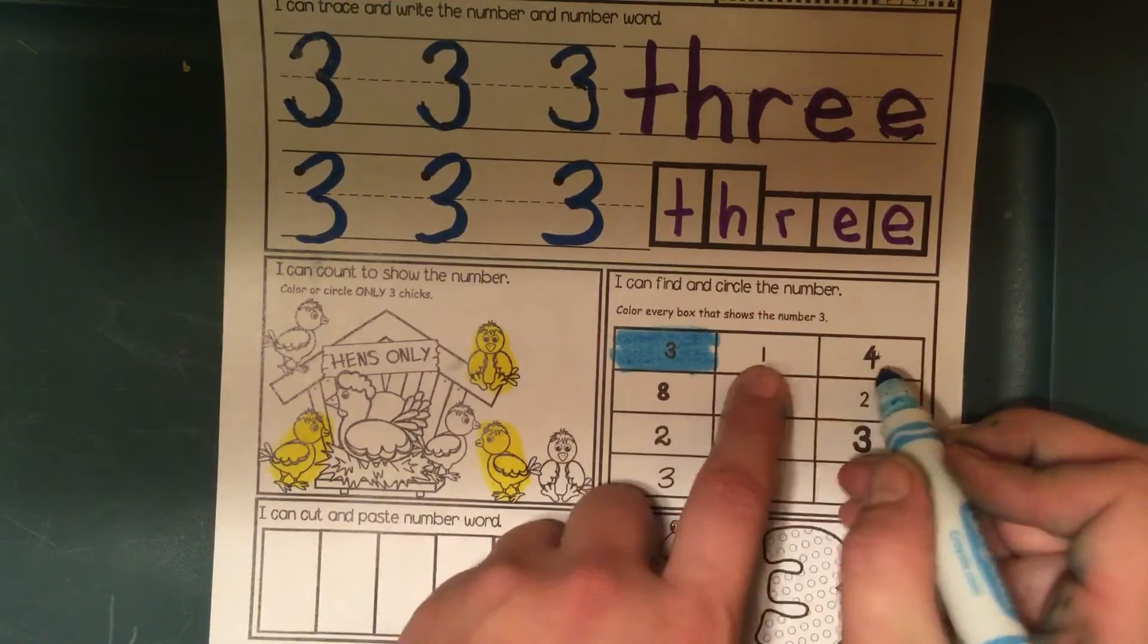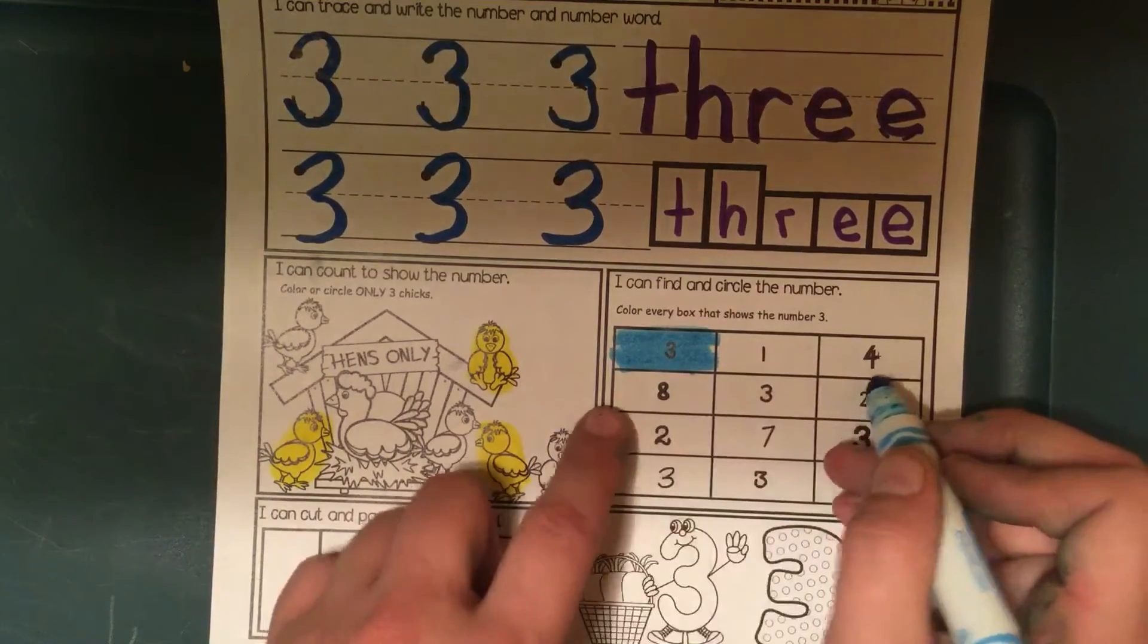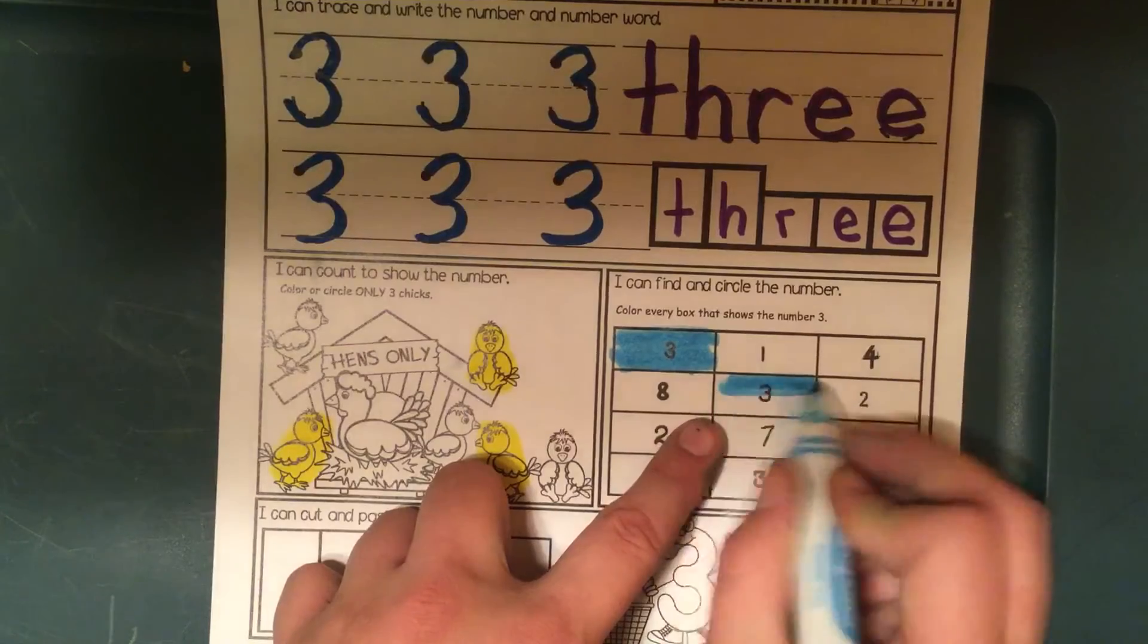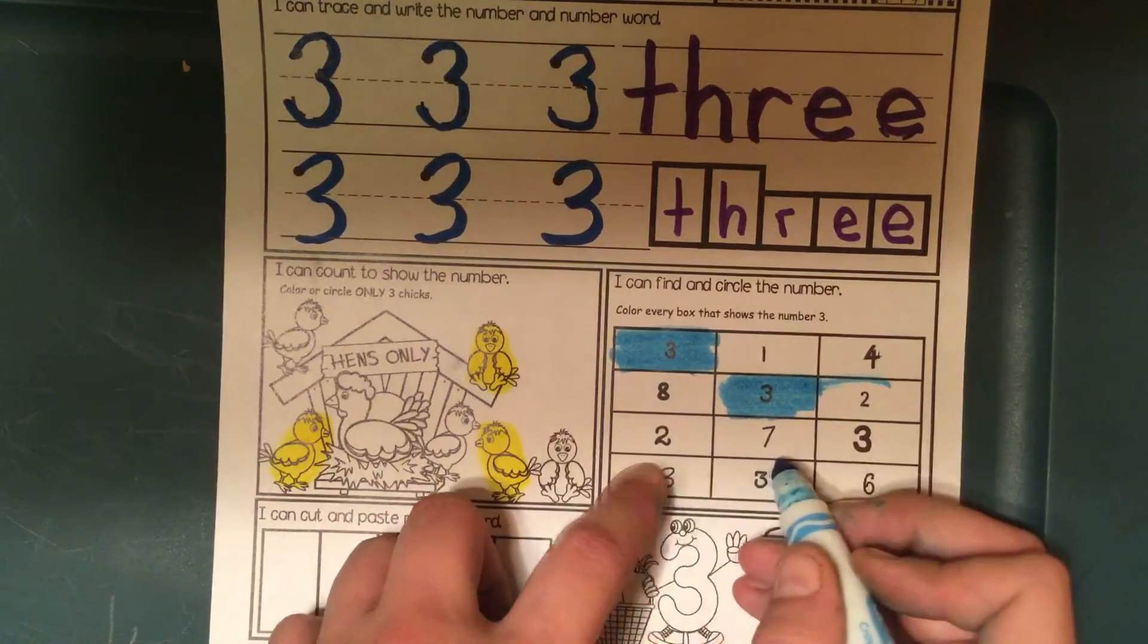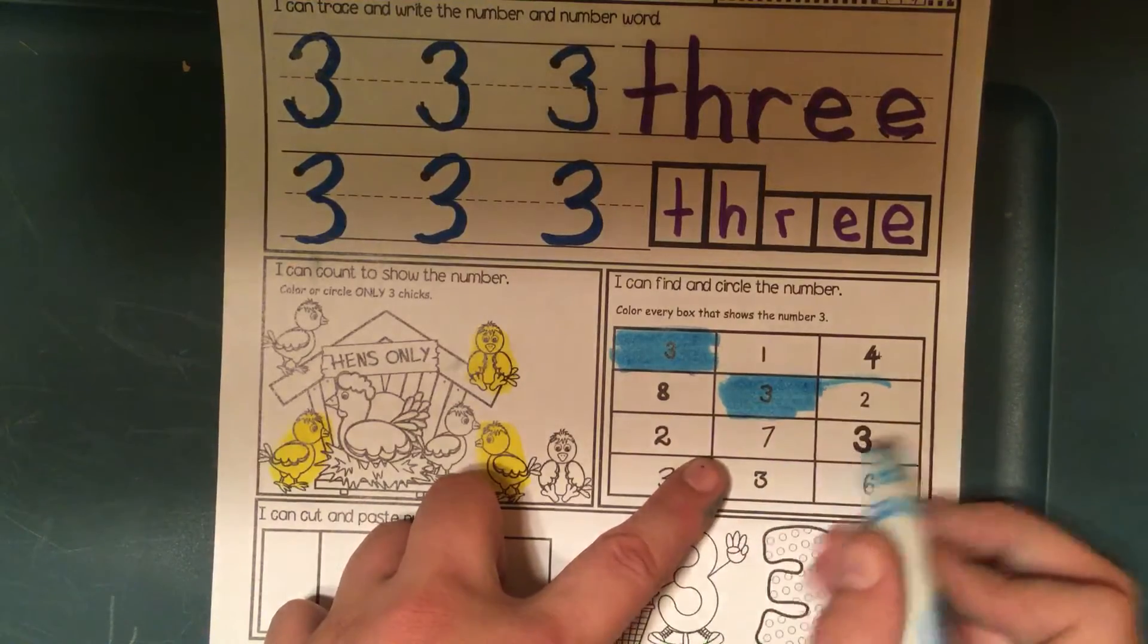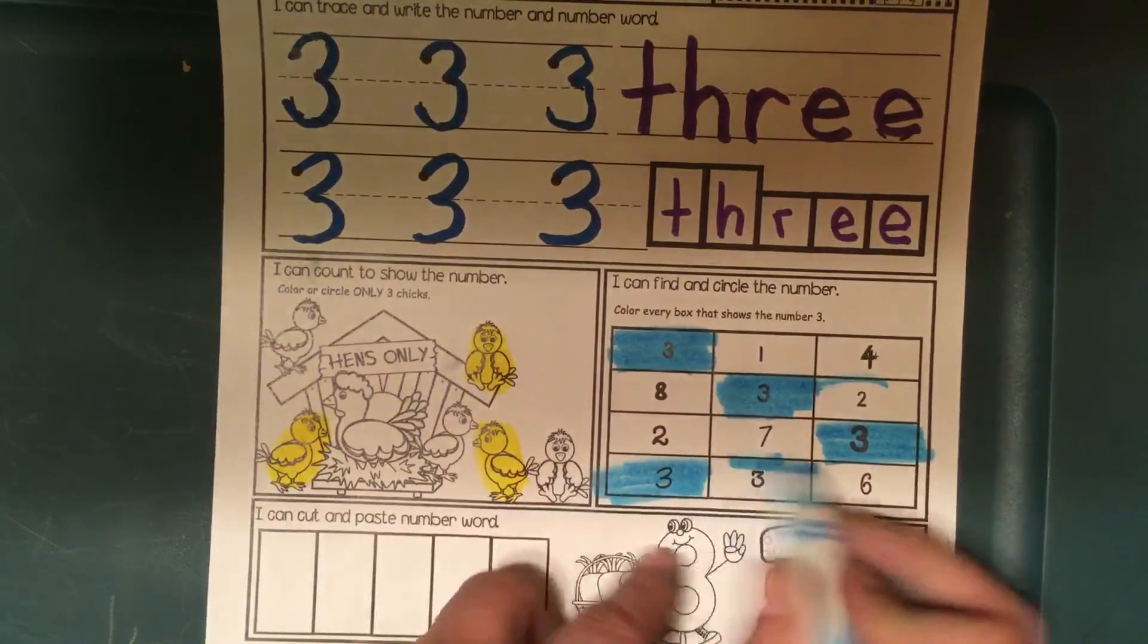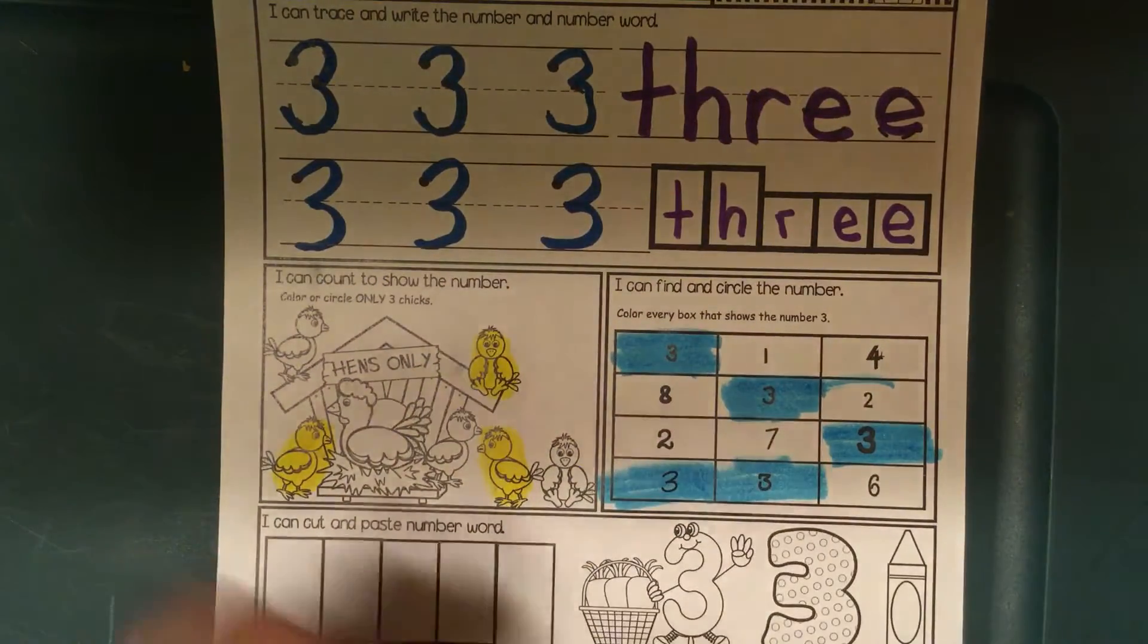So let's see. 3, 1, 4. Beisic, Niyun. Nishwasso, Niswe, Niswe, Nish, Nishwasso, Niswe, Nishwasso, Niswe, Niswe, Niswe, Nangodasso. All right.